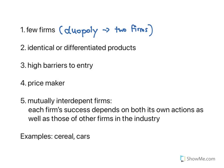The second characteristic is that firms have identical or differentiated products, so they can be like perfect competition where everyone sells the exact same thing, or they can be more like monopolistic competition where each firm is selling a slightly different product than their competitors. The third one is they have high barriers to entry, so it's very difficult to get into this type of market structure, and that's why there are such few firms — probably no more than 20 firms at most.